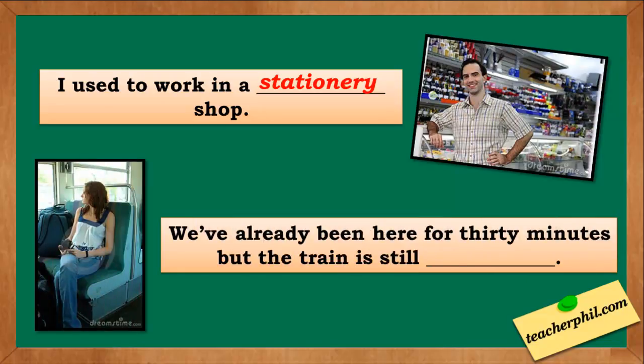The fourth one: we've already been here for 30 minutes but the train is still blank. The correct answer is stationary with an A. Remember that this word is an adjective which means unmoving. We've already been here for 30 minutes but the train is still stationary.